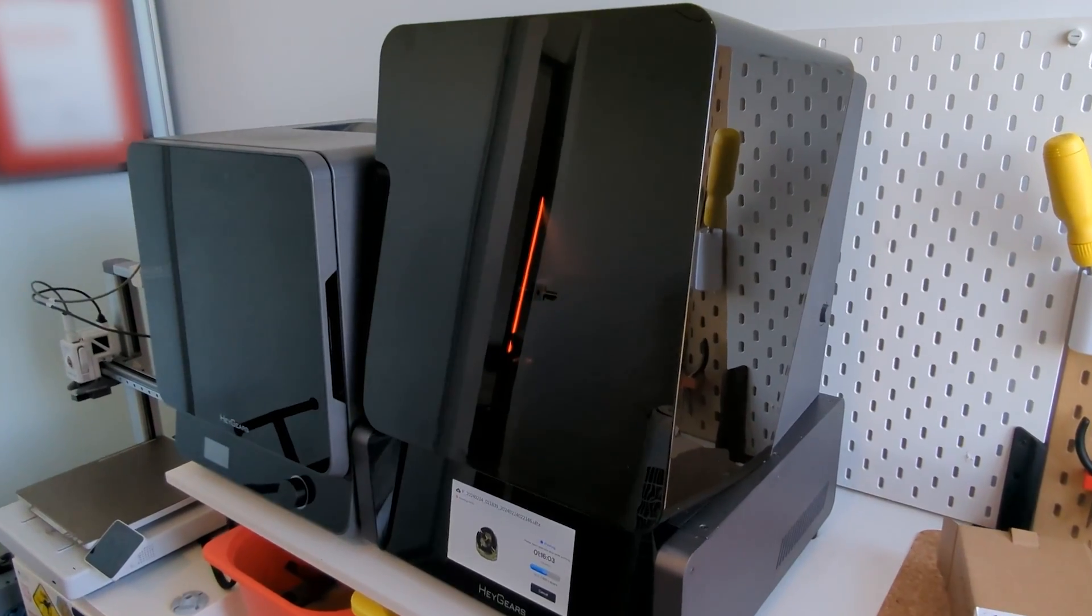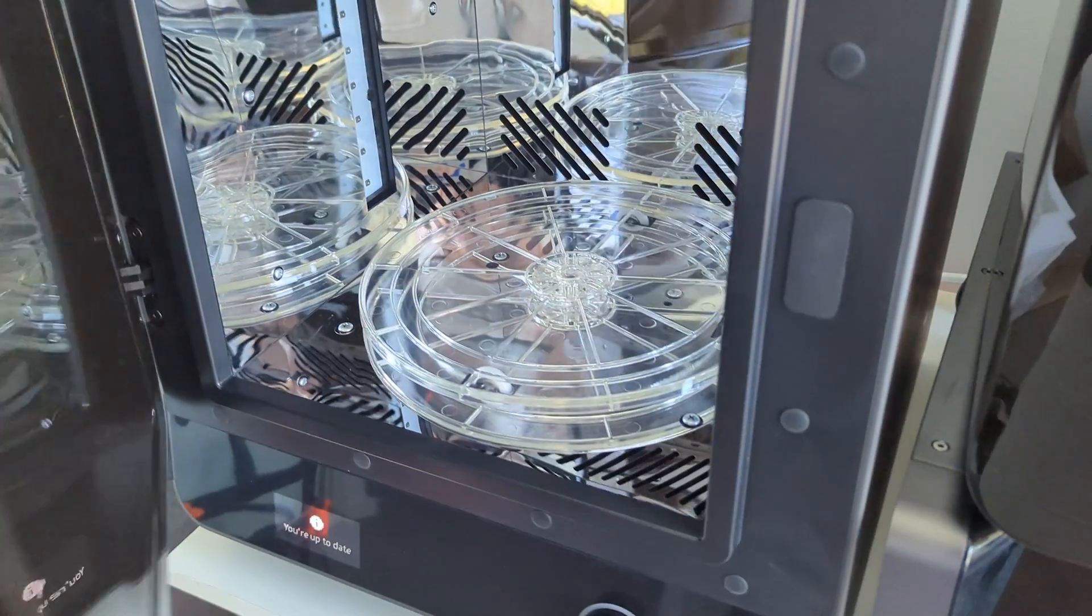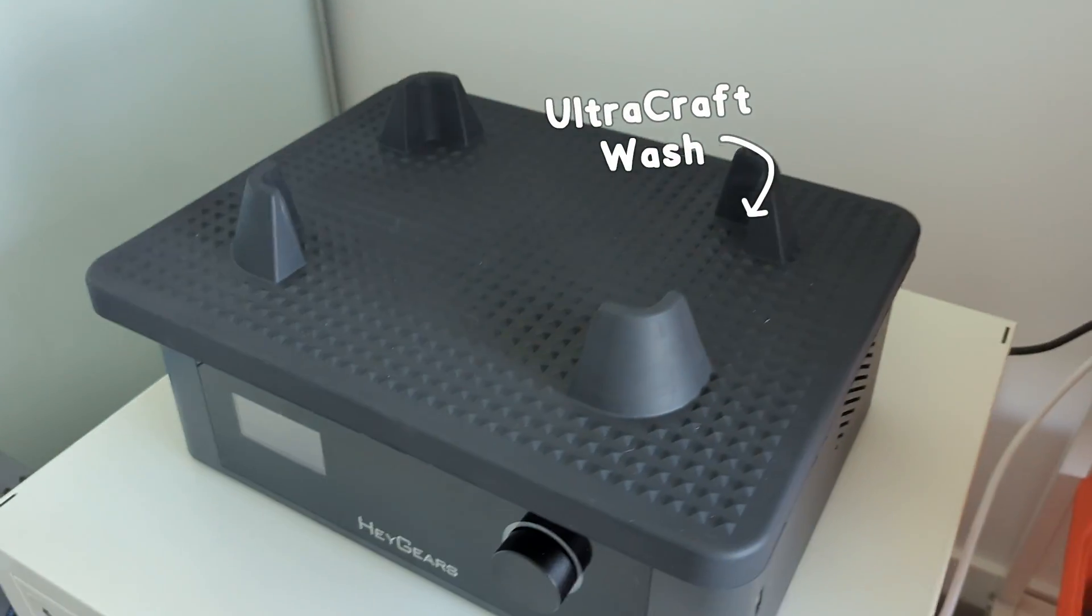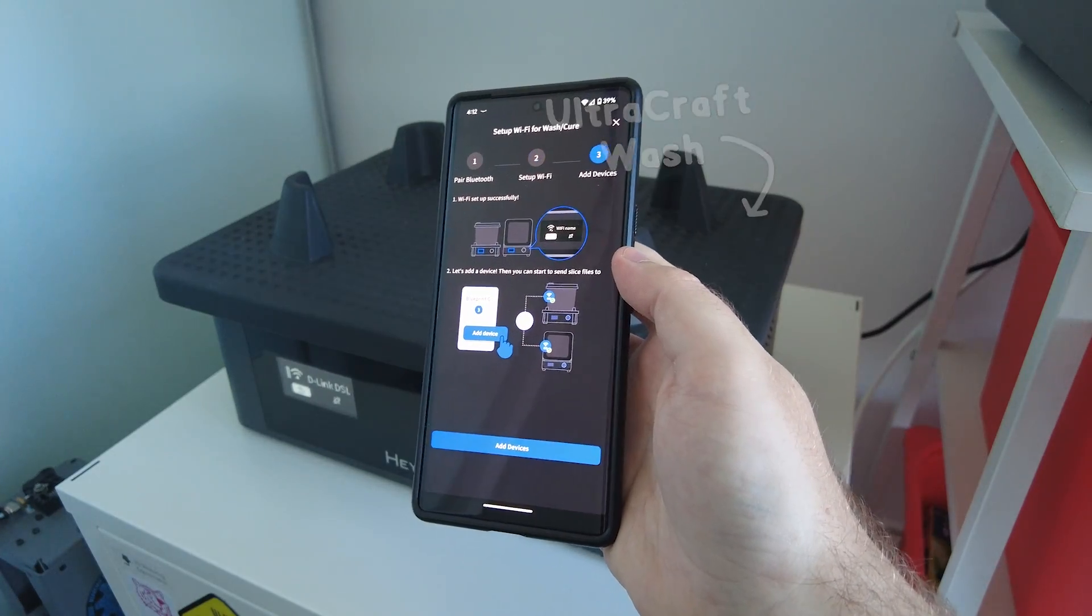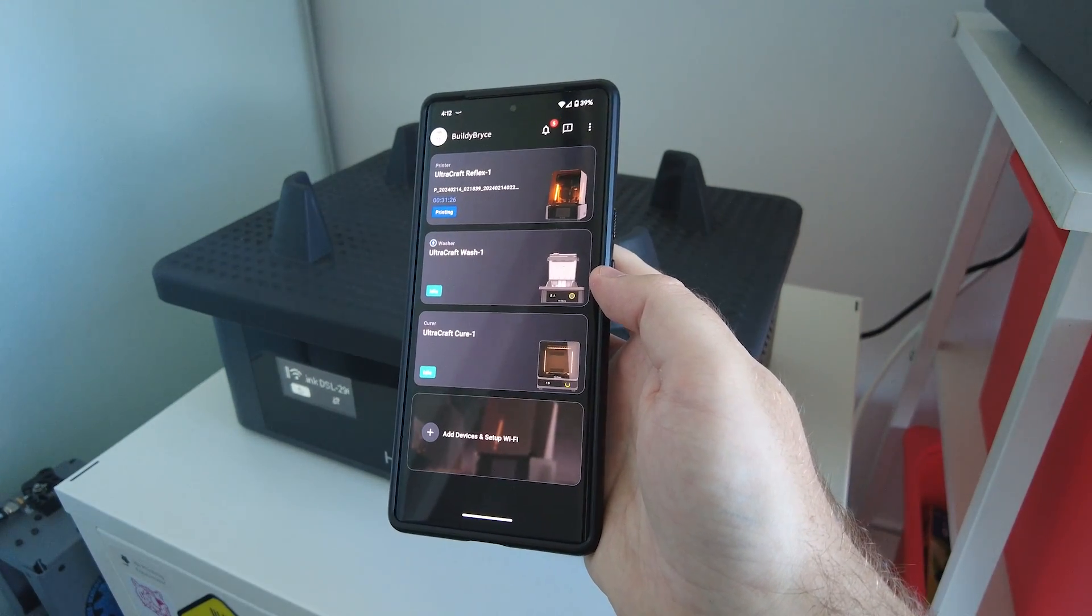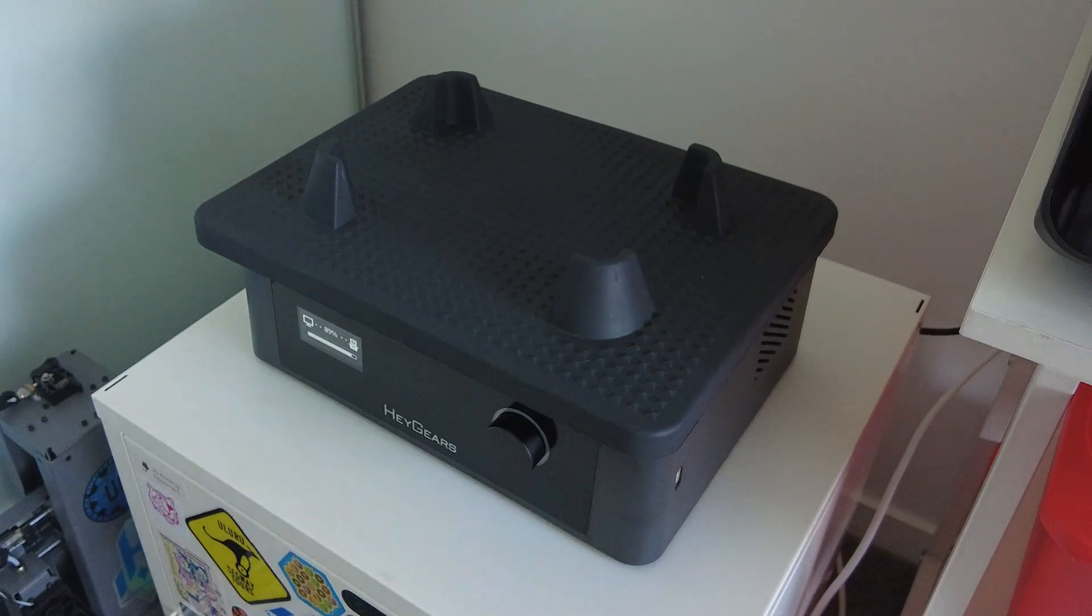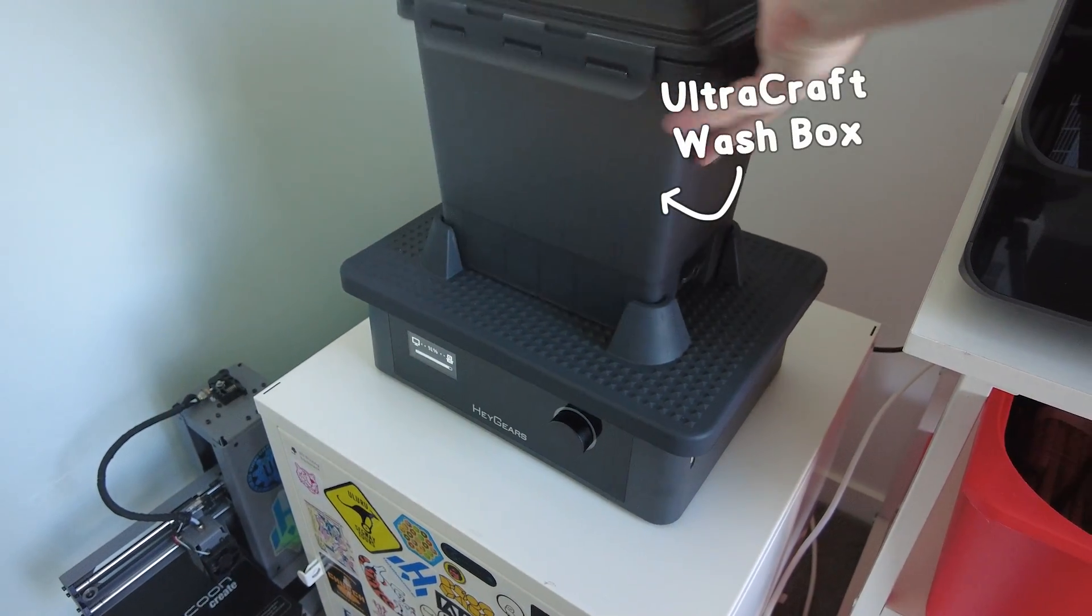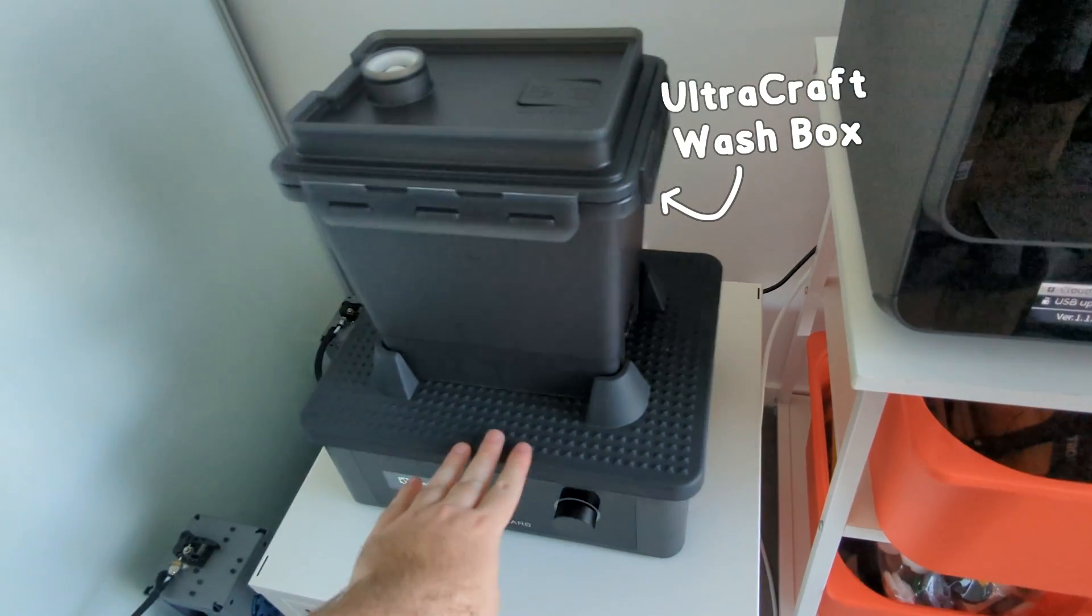Before you can put the print in the curing station though, it needs to be cleaned. So to do that, let's set up the UltraCraft wash station. It's important to note that the wash station shouldn't be placed on the same surface that the printer's on, because when this thing's running, it's going to shake like crazy, and that can affect the printer if it's printing. It also comes with two of these wash boxes that sit on top, but I'll show you more of that later.